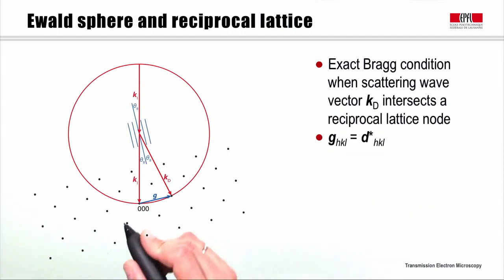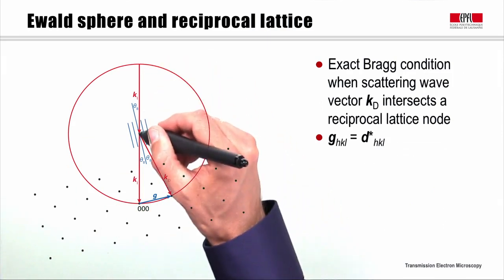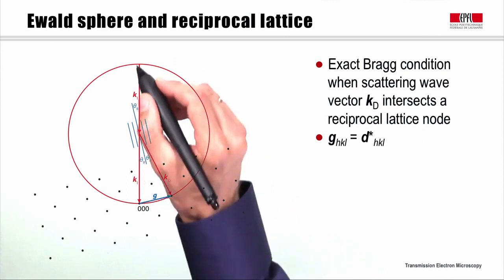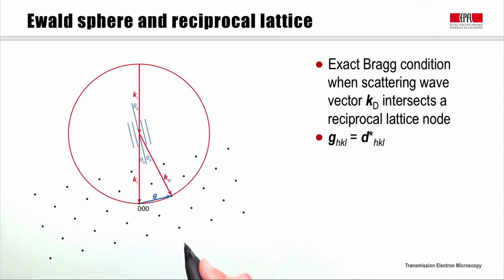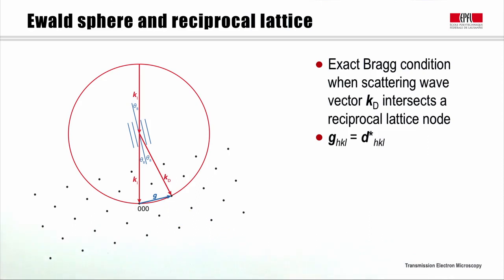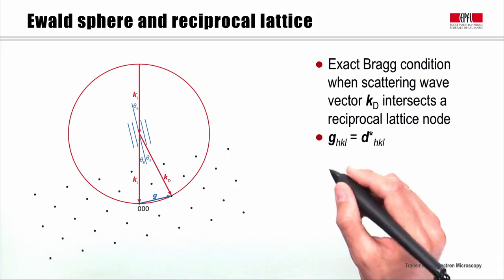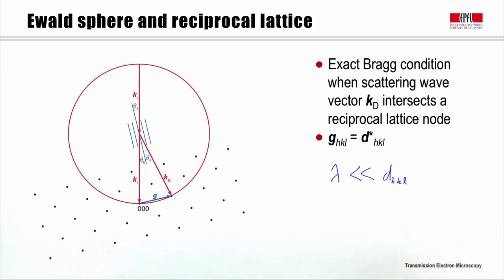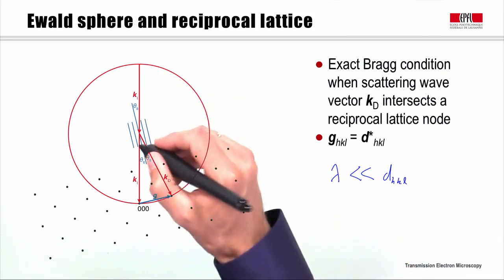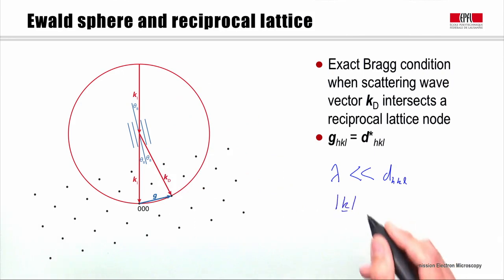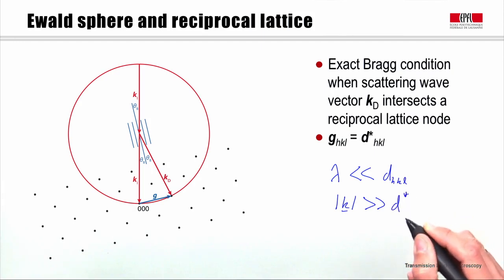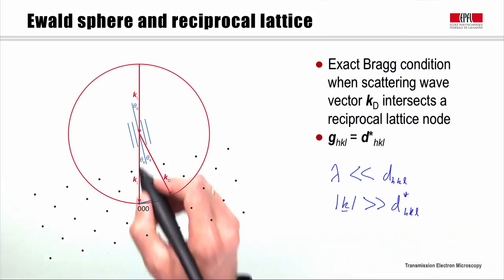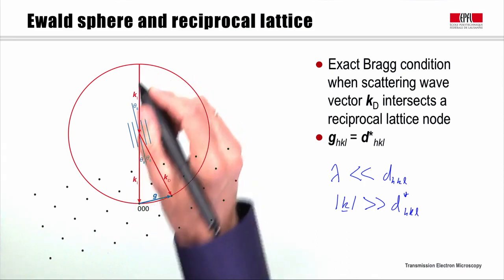Cleaning up that diagram, we can represent this scattering as follows: the incident wave vector Ki, with Bragg planes at angle theta_B relative to Ki, scattering at the Bragg angle, leading to diffraction for the plane corresponding to that reciprocal lattice node. In this representation I have had to make an exaggeration to keep it compact. Specifically, the electron wavelength lambda is much smaller than the typical plane spacing d_HKL. Because of that, the length of the wave vector k is going to be much greater than a typical reciprocal lattice spacing d*_HKL.